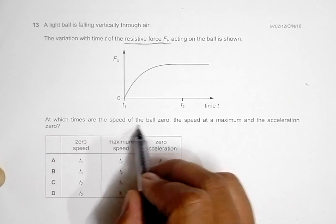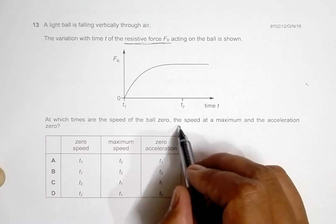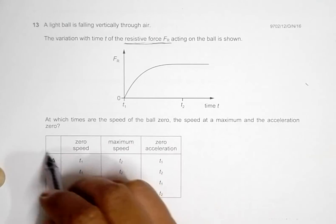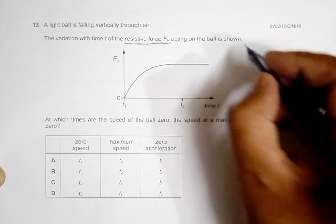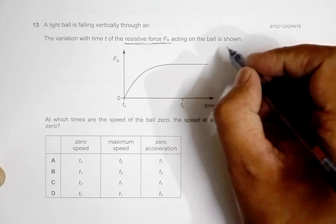From this data, we have to find at what times are the speed of the ball zero, the speed at a maximum, and the acceleration zero. So here we have several choices.